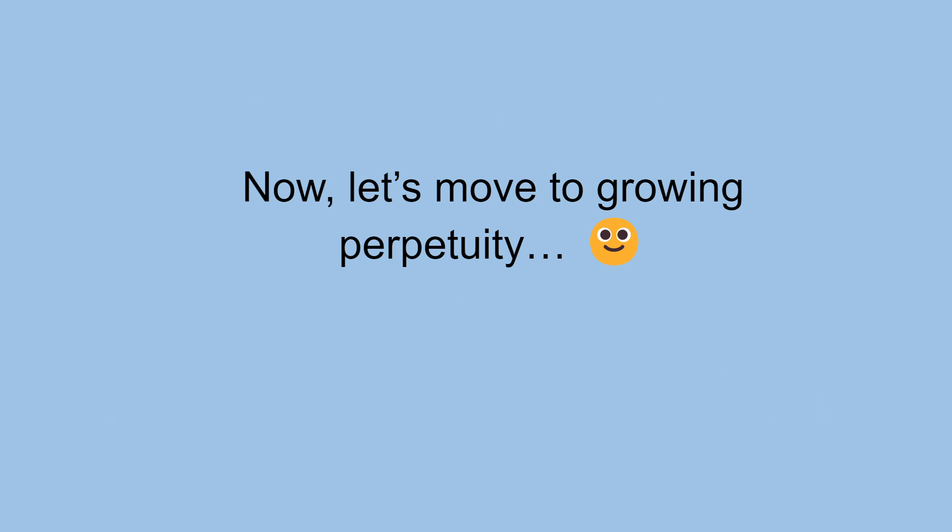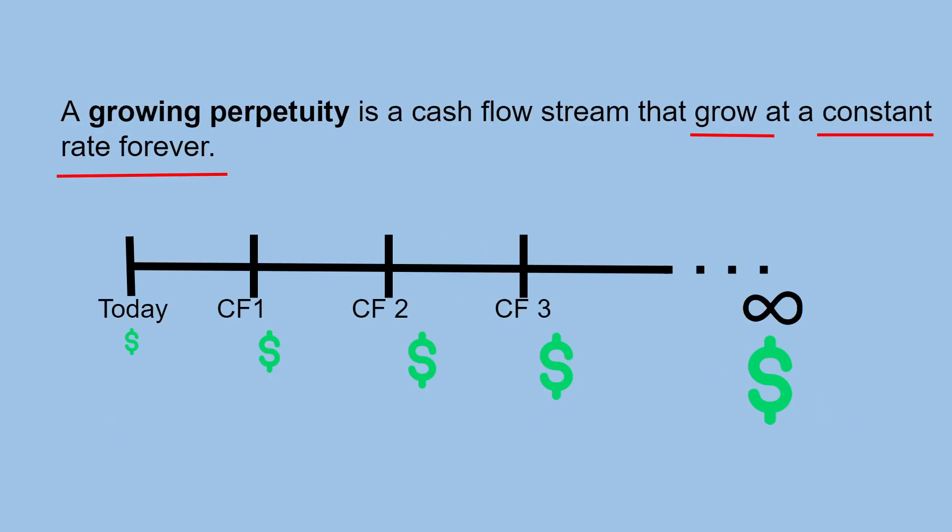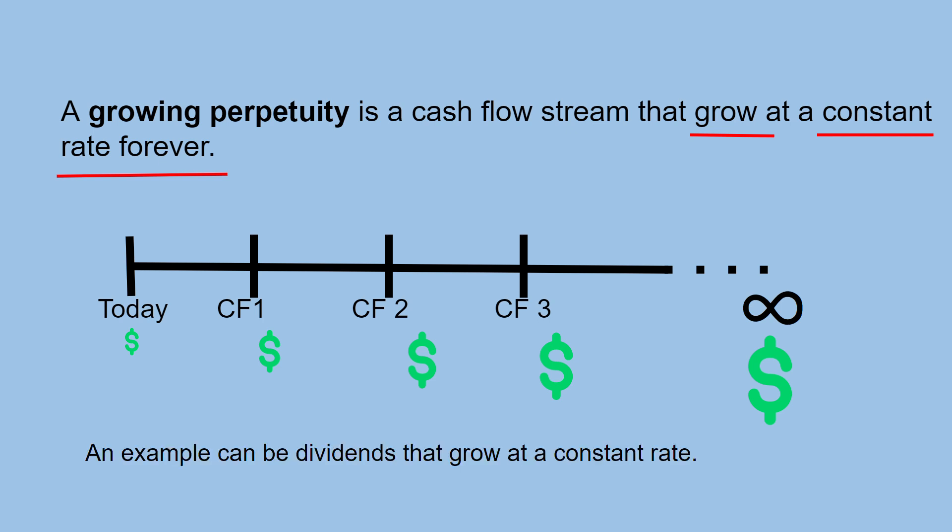Now let's move to growing perpetuity. A growing perpetuity is a cash flow stream that grows at a constant rate forever. An example can be dividends that grow at a constant rate.